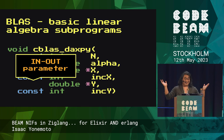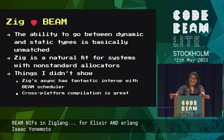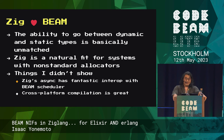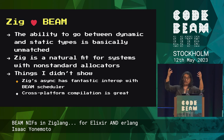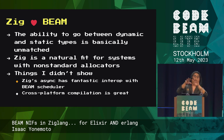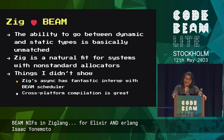In conclusion, Zig doesn't just like Elixir — it works really well with both Elixir and Erlang in the Beam ecosystem. Zig's ability to go between dynamic and static types is basically unmatched. For things I didn't show: there was a demo where it can detect a memory leak, which is a huge risk for NIFs. I substitute in an allocator that wraps the Beam allocator and can also do leak checking. Zig's async/await has fantastic interop with the Beam scheduler, and cross-platform compilation is amazing — using the same framework we can compile to an embedded platform and ship that in a Beam project release.